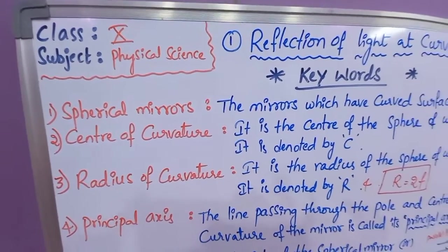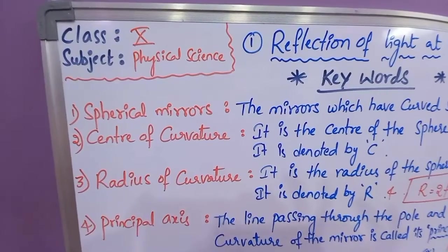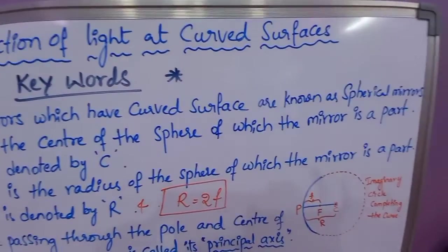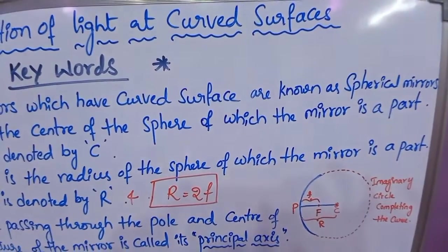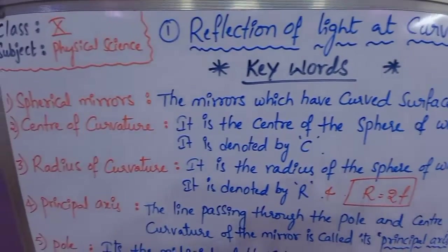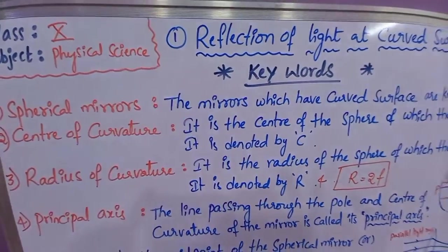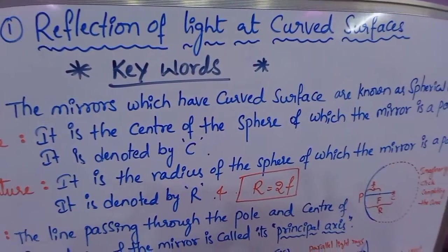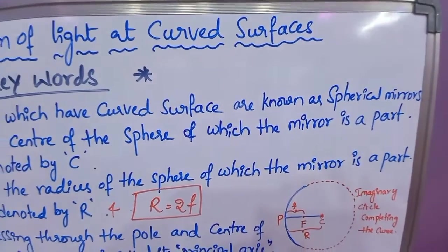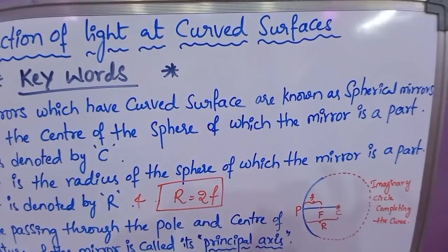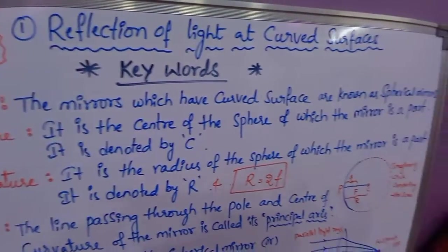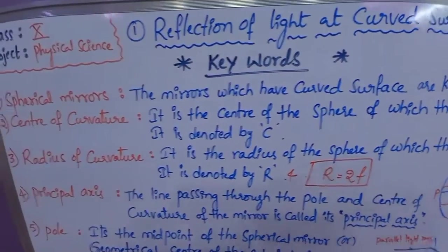The first keyword is spherical mirrors. What are spherical mirrors? The mirrors which have curved surfaces are known as spherical mirrors. We know about plane mirrors — plane mirrors have a plain surface, whereas spherical mirrors have a curved surface. Due to that curved surface they are known as spherical mirrors. In this lesson we are going to learn about two types of spherical mirrors: concave mirrors and convex mirrors.